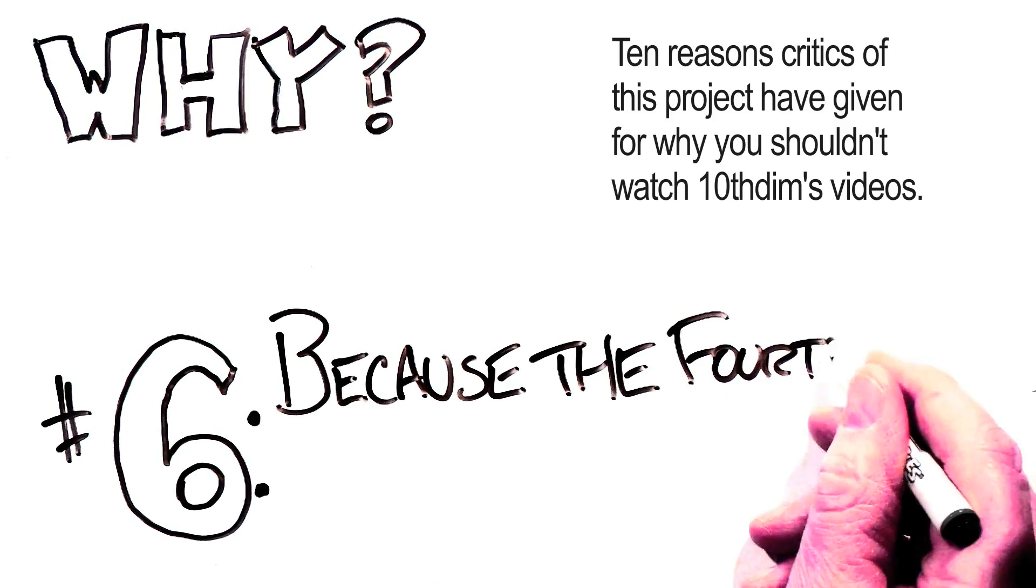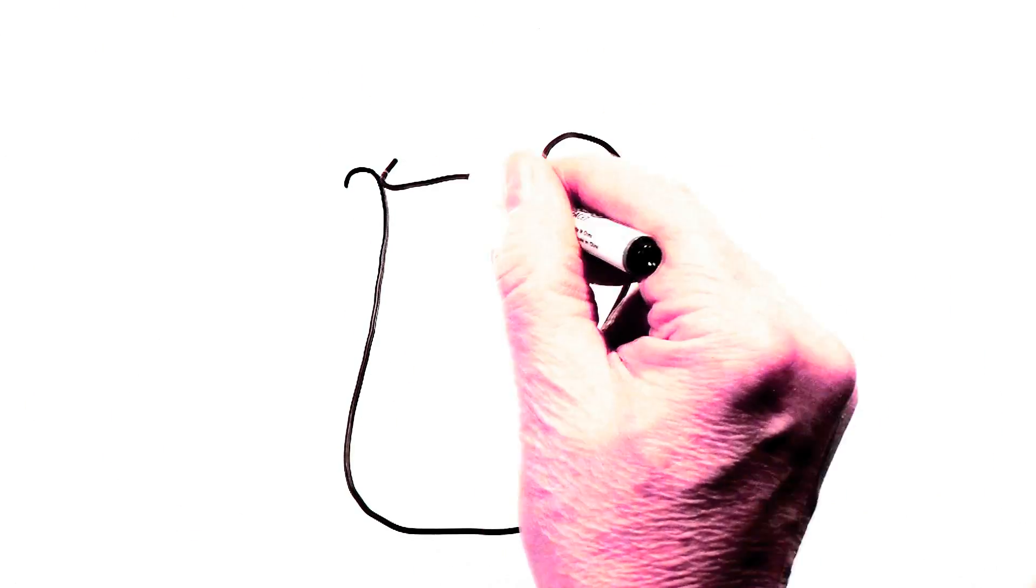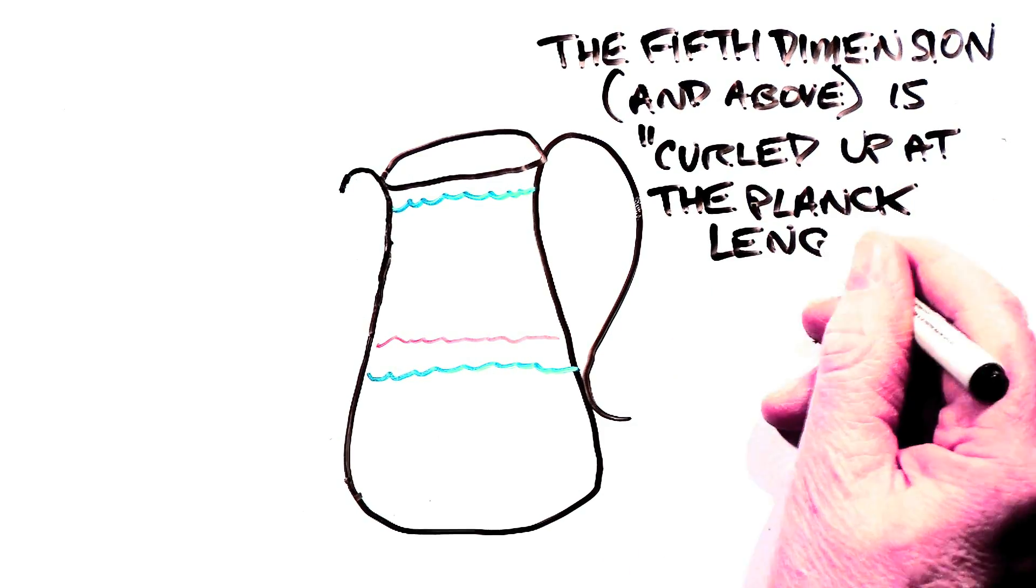Reason number six: the fourth dimension is not a spatial dimension, it's a temporal one. If there are ten spatial or space-like dimensions and theorists tell us the fifth dimension and above are curled up at the Planck length, then what are they really talking about?